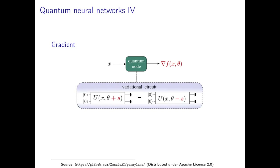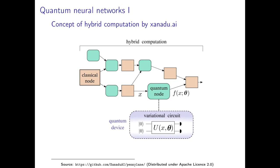For this neural network, we can do backpropagation. We know how to compute numerically the gradients of classical functions — our classical boxes — but also of this quantum box. So we can perform forward computation by evaluating the value of a function given data and given parameters, and we know how to vary the parameters theta in order to minimize our cost function. It allows us to build a hybrid quantum-classical neural network.